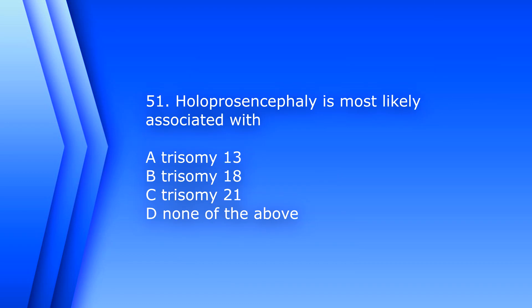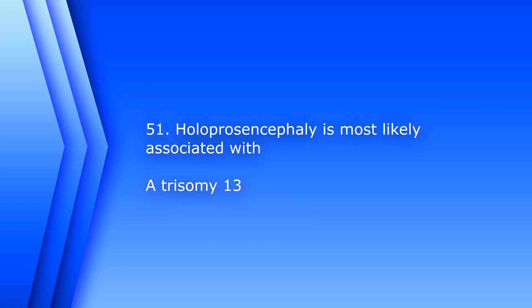Question 51. Holoprosencephaly is most likely associated with: A. Trisomy 13, B. Trisomy 18, C. Trisomy 21, D. None of the above. The answer is A, Trisomy 13.